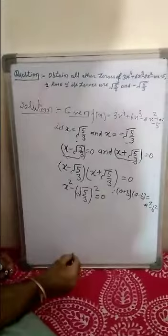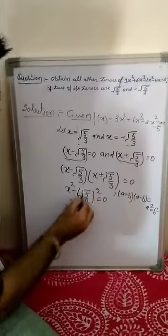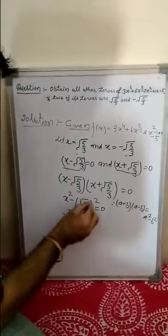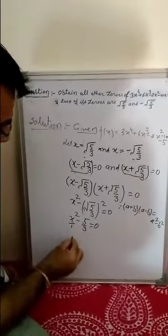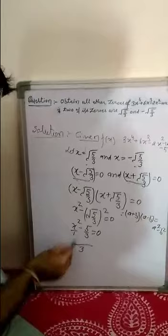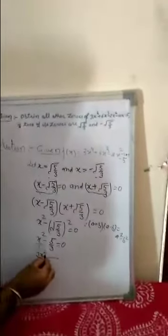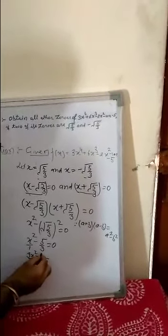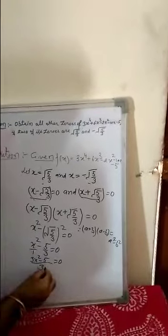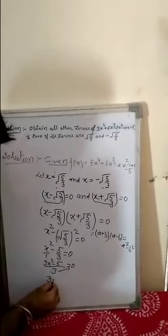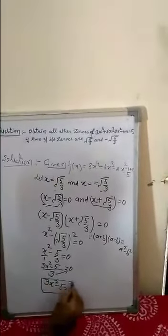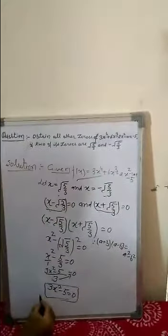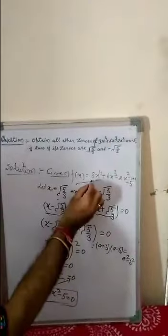This gives x² - (√5/3)² = 0. Taking LCM, 1 divided by 3: 3 is multiplied by x² giving 3x², and 3 divided by 3 gives 1, multiplied by 5 gives 5. So the factor is 3x² - 5 = 0. This value is the divisor and the original polynomial is the dividend.